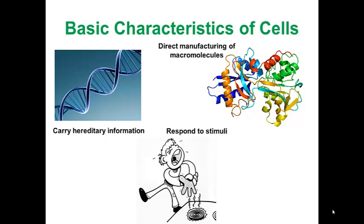Cells also direct the manufacture of many macromolecules. These can include proteins, lipids, nucleic acids, and carbohydrates. And cells can manufacture these molecules and use them as the building blocks of life.